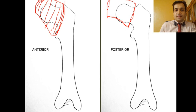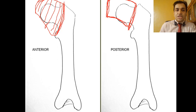A key point here: the attachment of the hip joint capsule is more distal anteriorly as compared to posteriorly. This means anteriorly, the hip joint capsule tends to provide more coverage to the hip joint.